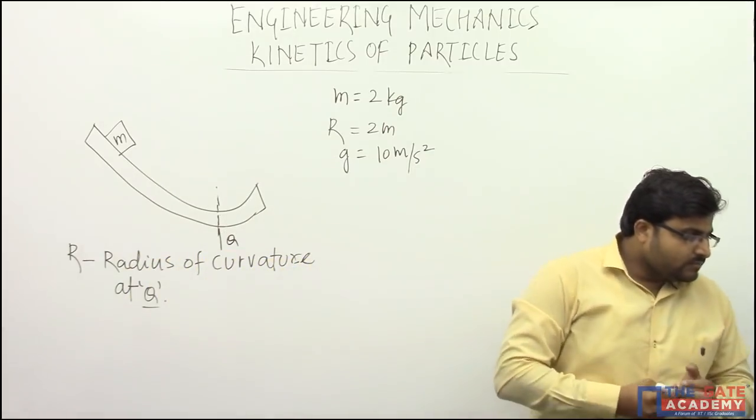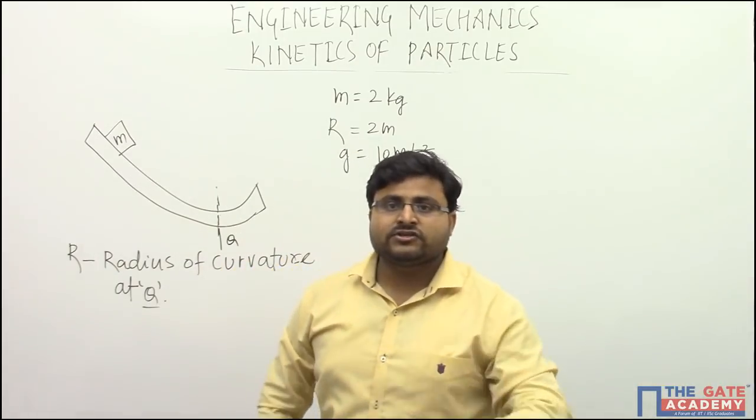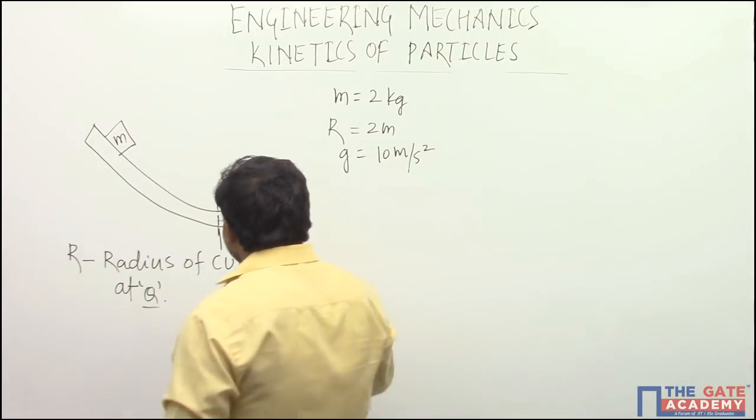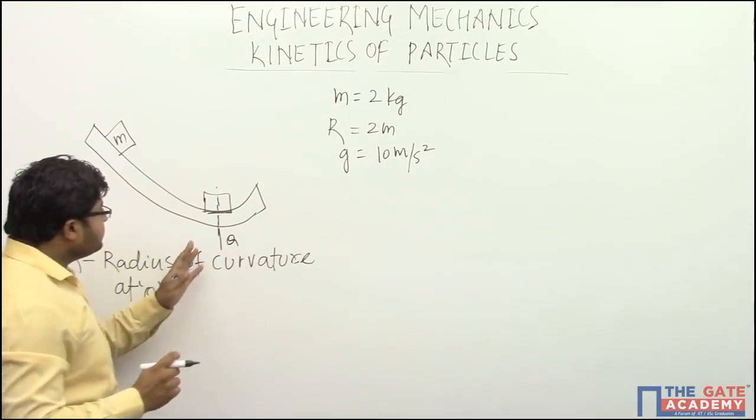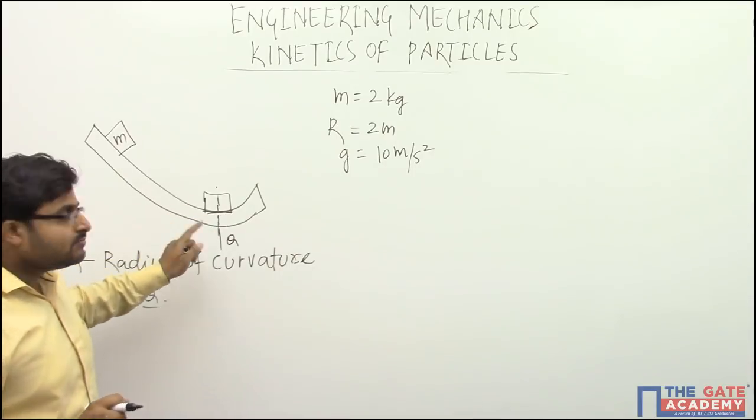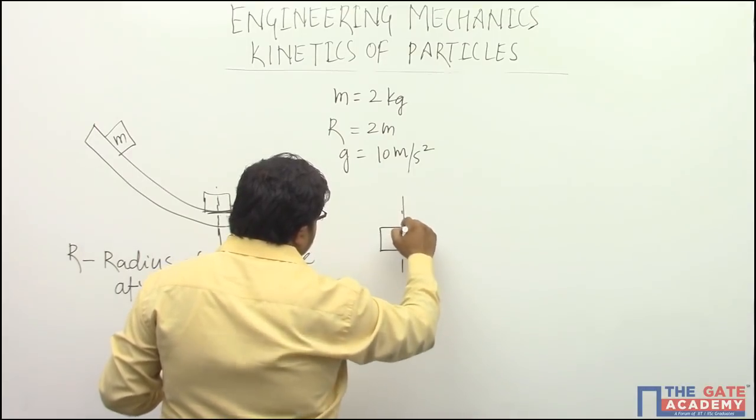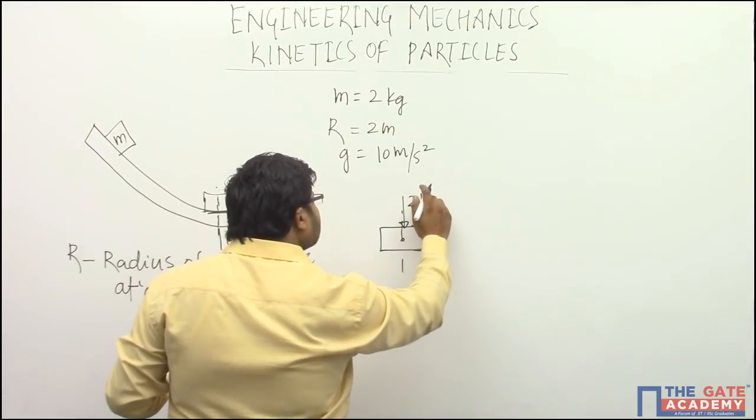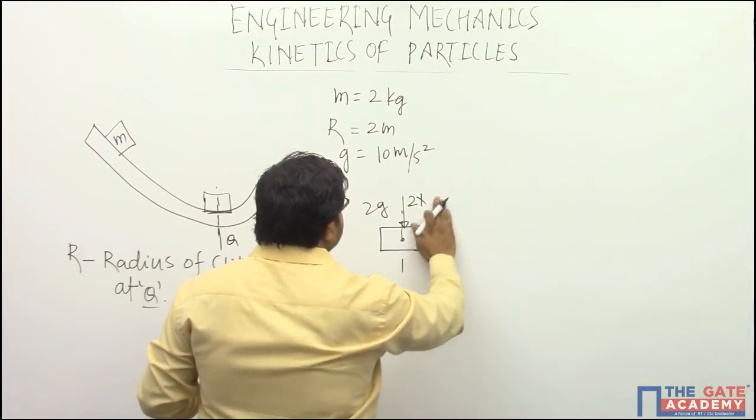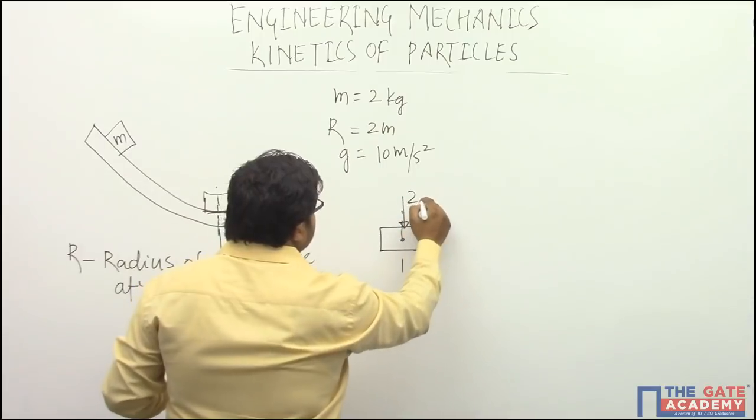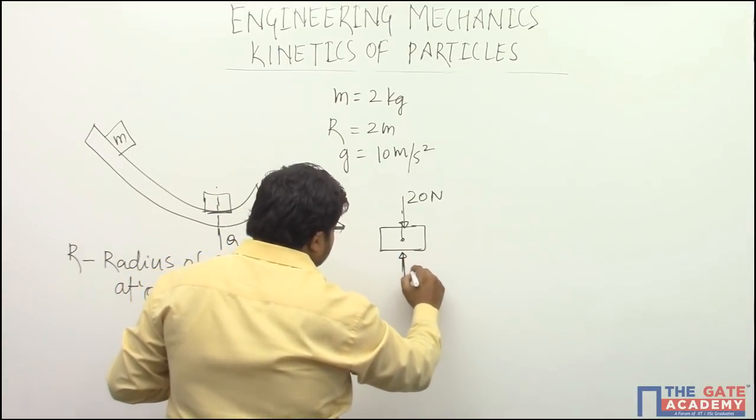Now when this 2 kg block will reach the point Q, at that point we have to tell the normal reaction of the block. So first you understand at this point when the block will reach, we have to draw the force diagram of this block. On this block, 2 multiplied by G, given as 10, so I will write directly 20 Newton weight acting downward. Some normal reaction will be there acting upward.